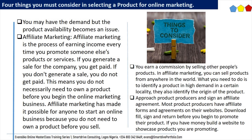You earn a commission by selling other people's products. In affiliate marketing, you can sell products from anywhere in the world. What you need to do is identify a product in high demand in a certain locality, identify the origin of the product, approach product producers and sign an affiliate agreement. Most product producers have affiliate forms and agreements on their websites — download, fill, sign and return before you begin to promote their product. If you have money, build a website to showcase the products you are promoting. A website is also a means of reference to your clients.